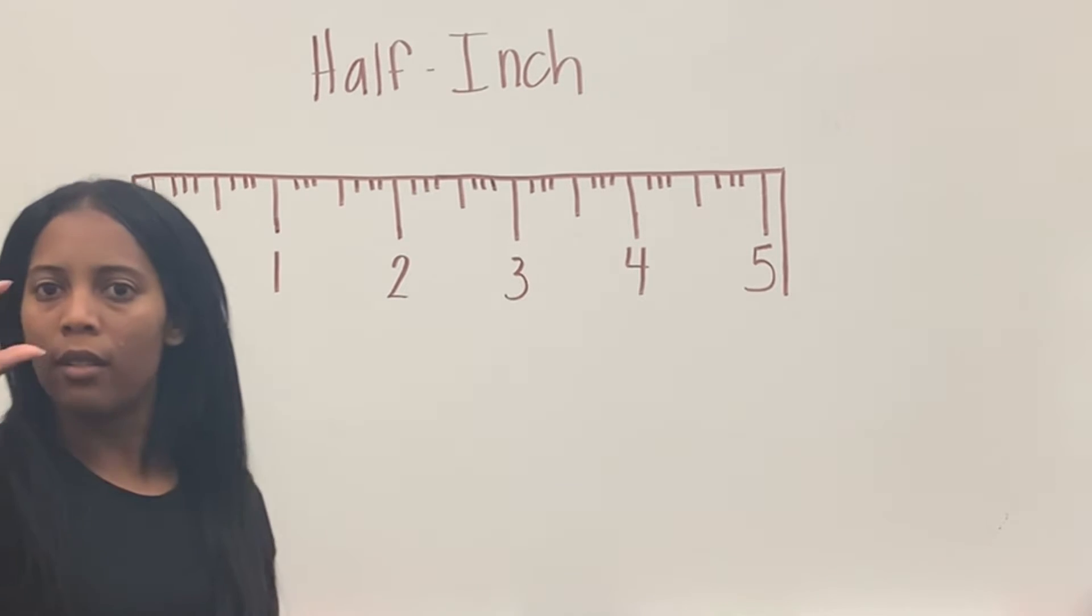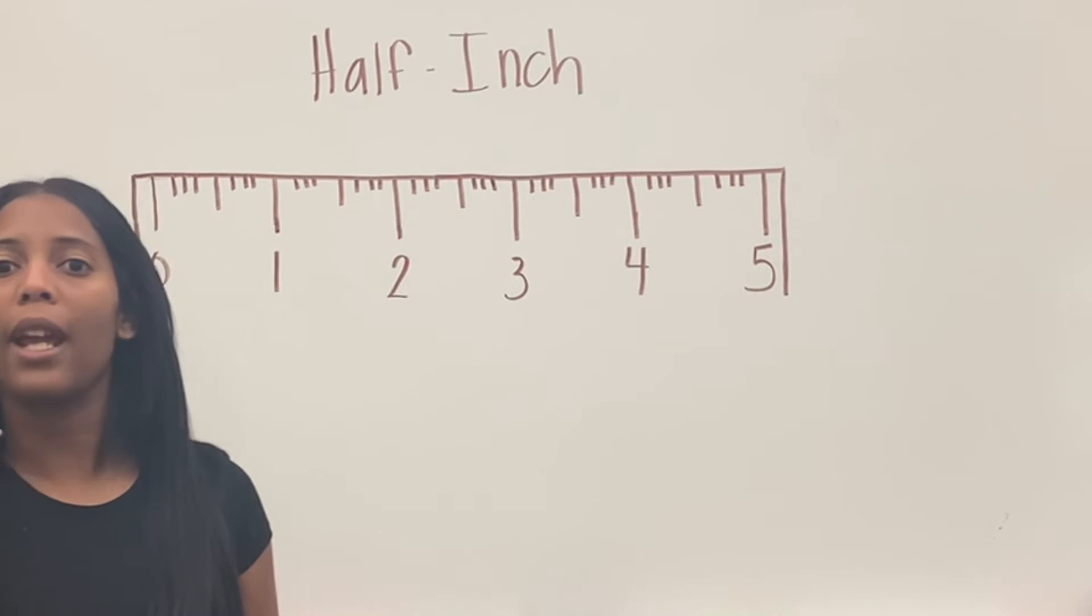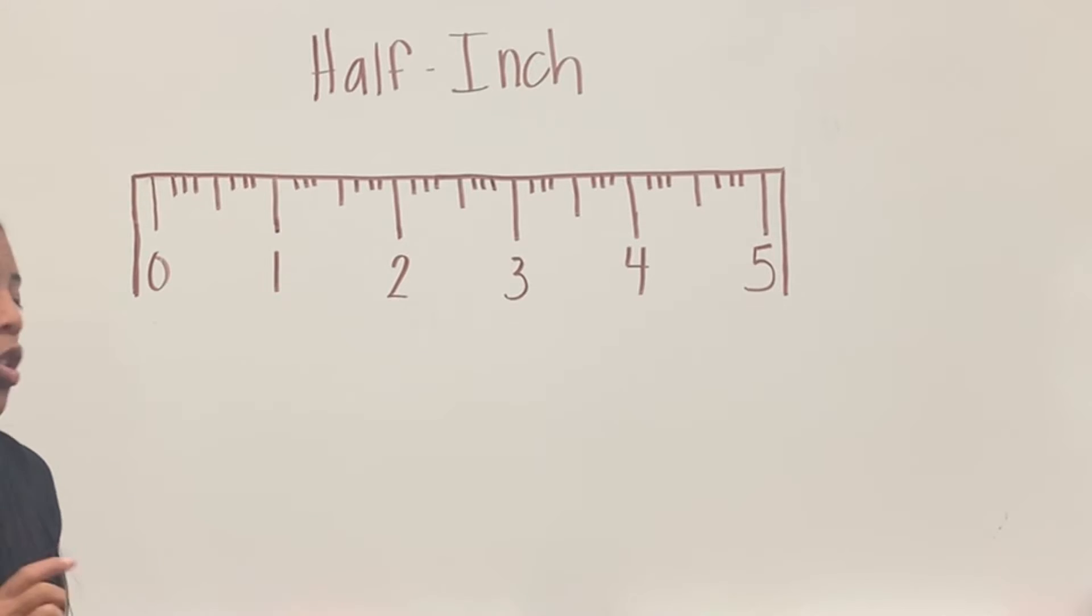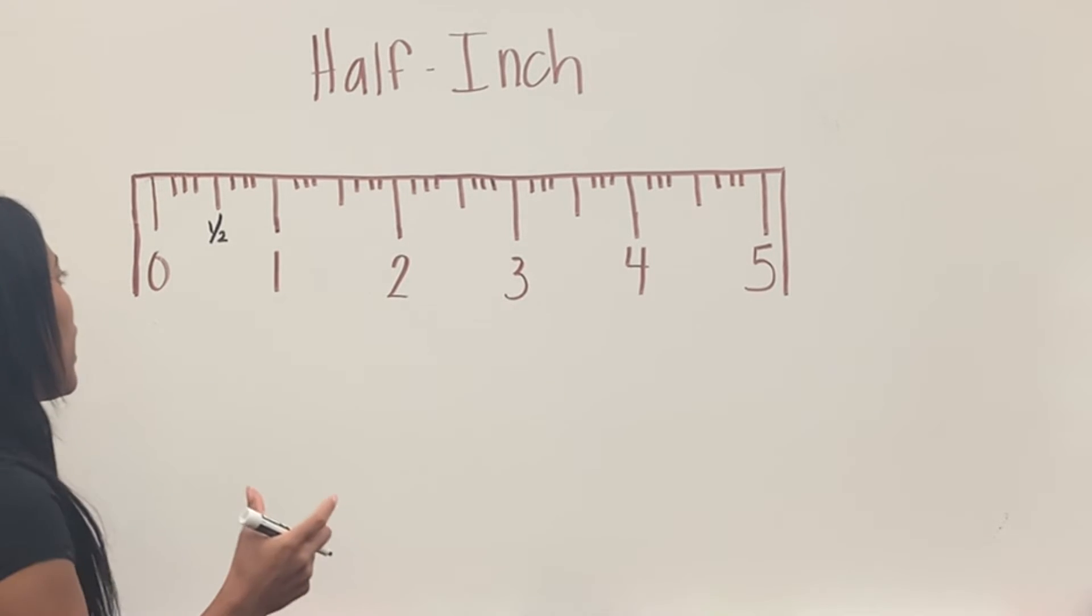That line that's a little longer than the rest is called a half inch. So whenever you write half inch, think about the fraction one half. So right here, I will put one out of two, because I'm not at one inch yet. I didn't even make a full inch yet, so it's a half of an inch.